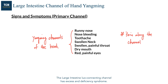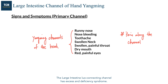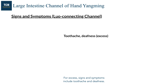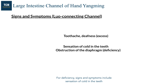The large intestine lower connecting channel has excess and deficiency syndromes. For excess, signs and symptoms include toothache and deafness. For deficiency, signs and symptoms include sensation of cold in the teeth and obstruction of the diaphragm.